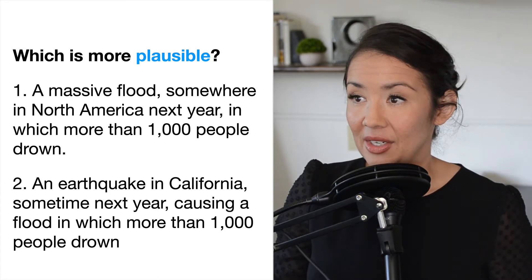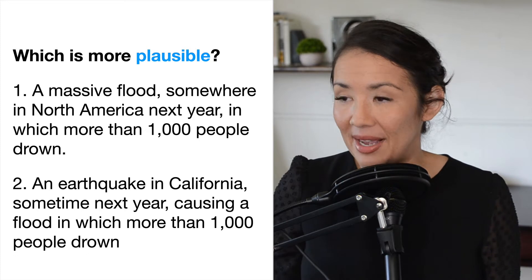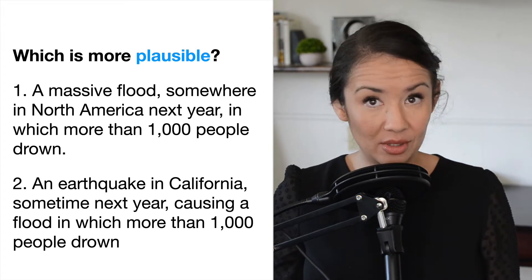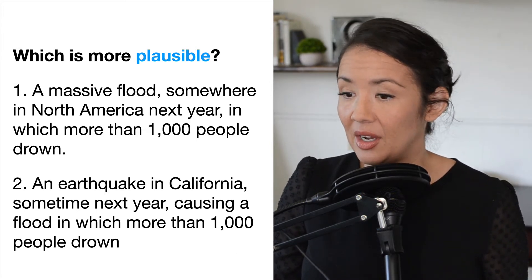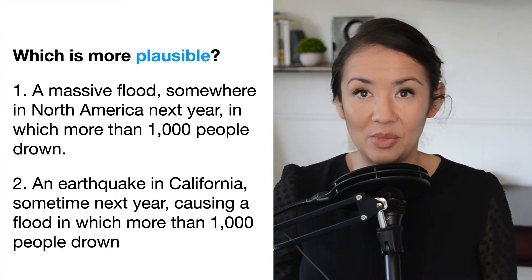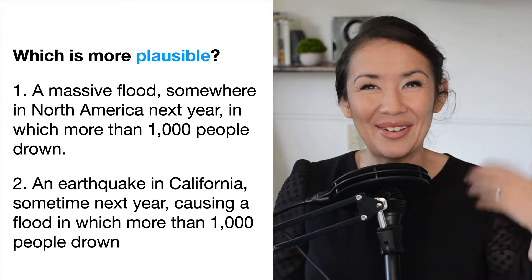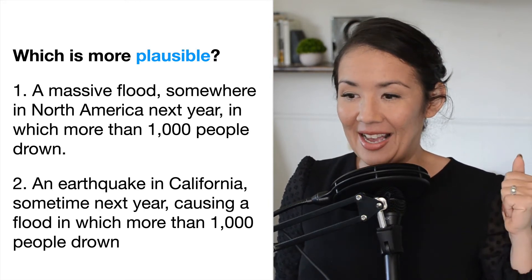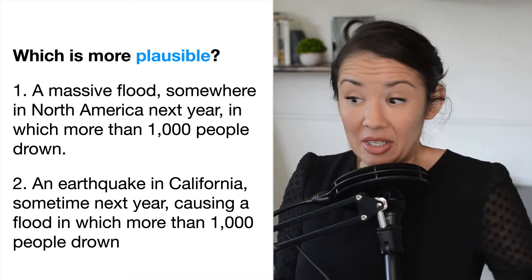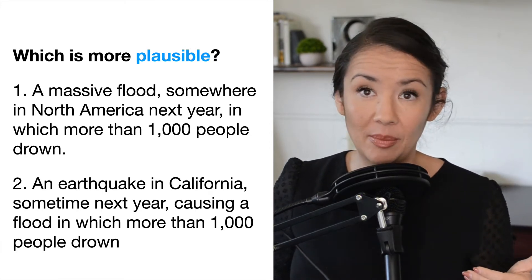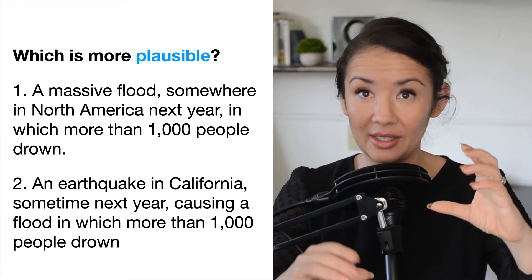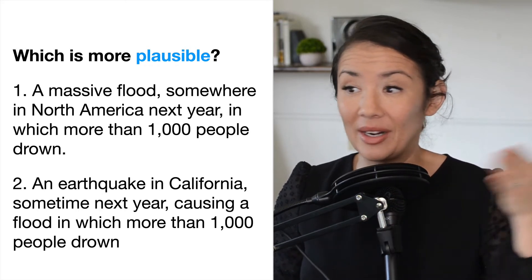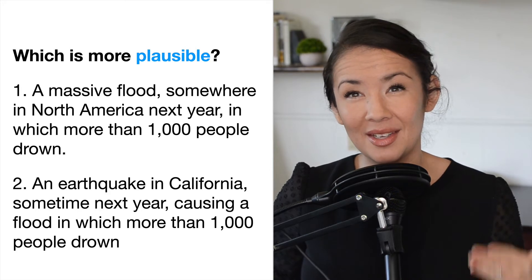Let's look at another scenario. Which is more plausible: a massive flood somewhere in North America next year in which 1,000 people drowned, or an earthquake in California sometime next year causing a flood in which more than 1,000 people drowned? The second example feels more plausible because California has earthquakes, and an earthquake could definitely cause a flood killing 1,000 people. But that is a joint probability of an earthquake in California and a flood. The first example is just a single probability that a flood, anywhere in North America, would kill 1,000 people.